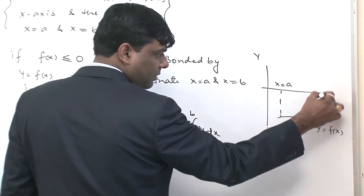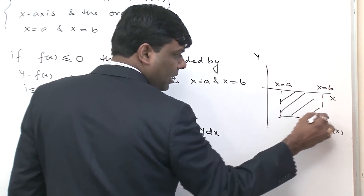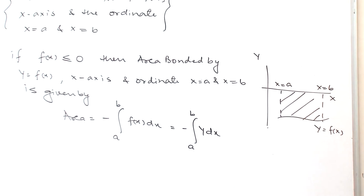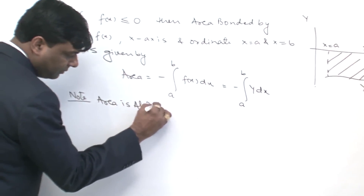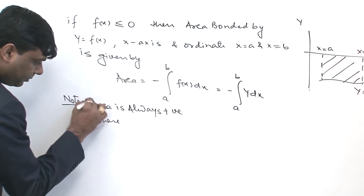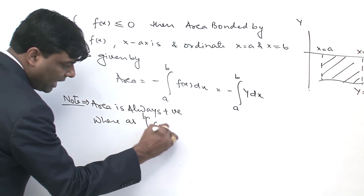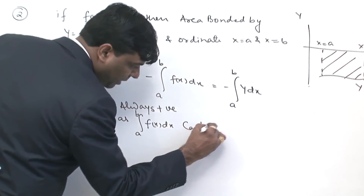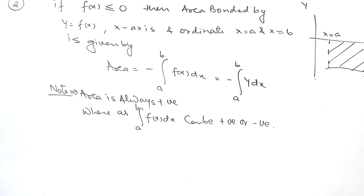Area is always positive, whereas the integral can be positive as well as negative. Note: area from a to b is always positive, whereas integral a to b of f(x) dx can be positive or negative.